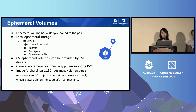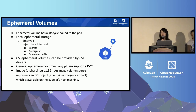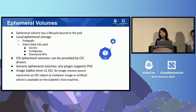We also support ephemeral volumes. An ephemeral volume becomes available when the pod becomes available and then goes away when the pod goes down. Local ephemeral storage, such as emptyDir, can be used as a scratch space for the pod. We also have secrets that can be used to store sensitive information, config maps that can be used to inject config data into the pods, CSI ephemeral volumes that require a special CSI driver such as the Secret Store CSI driver, and generic ephemeral volumes that allow any plugin that supports dynamic provisioning to be used as an ephemeral volume and have its lifecycle bound to a pod.